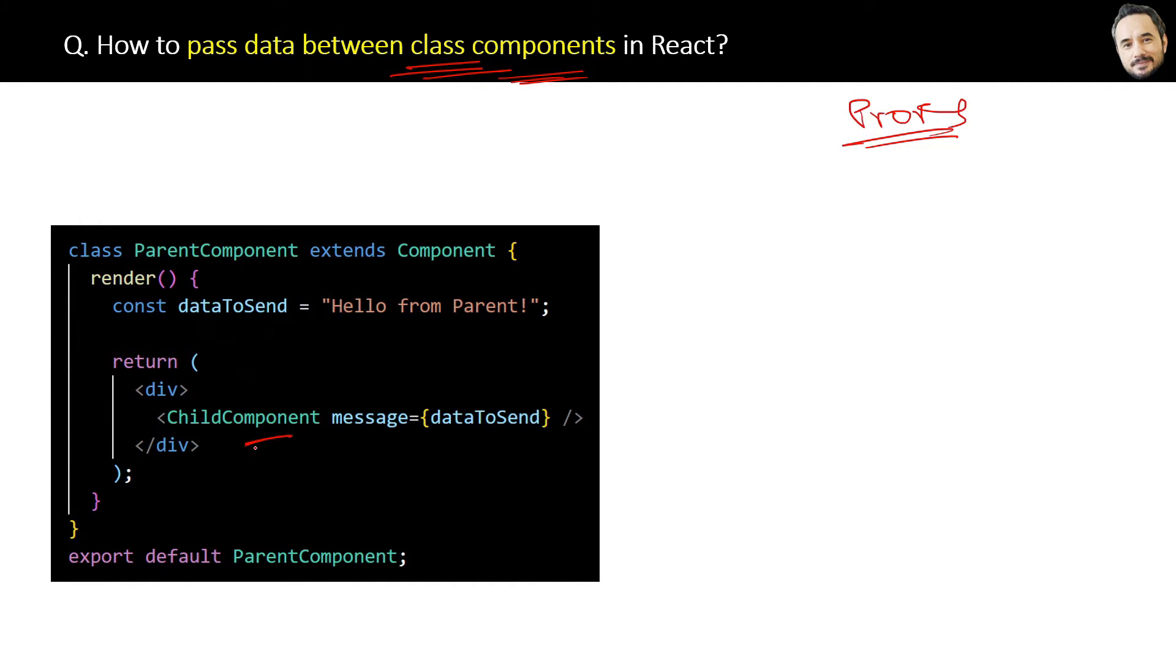To pass data to the child component, first you will use the attribute here with its value. This message attribute to data value is coming from our above variable, this dataToSend.